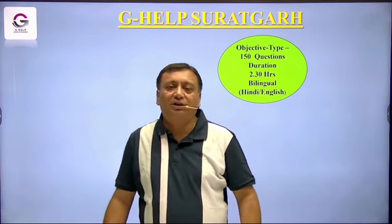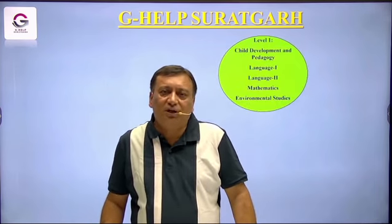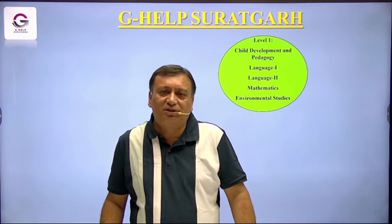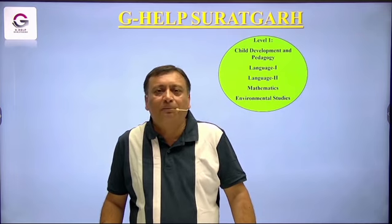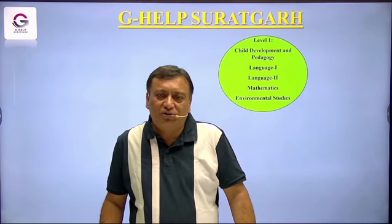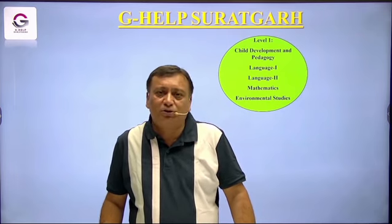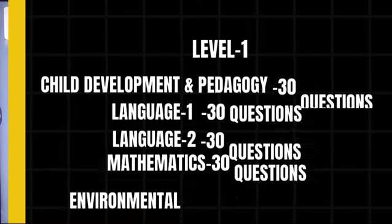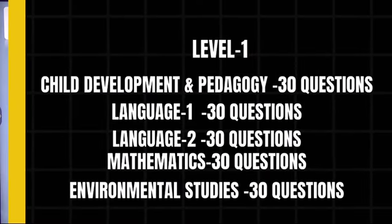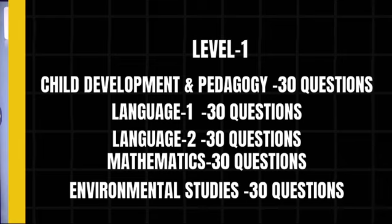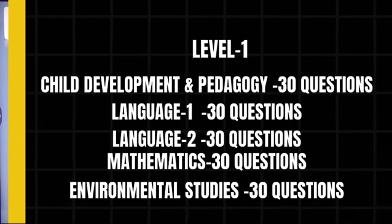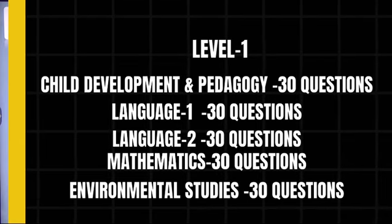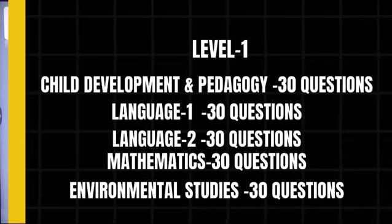For Level 1, which is in BSTC, there are 5 sections and you will be given 30 questions from each section. The first section is Child Development and Pedagogy, the second is Language 1, the third is Language 2, the fourth is Mathematics, and the fifth is Environmental Studies.